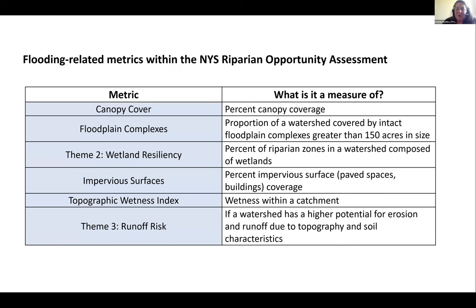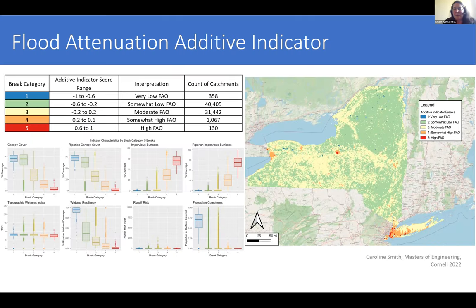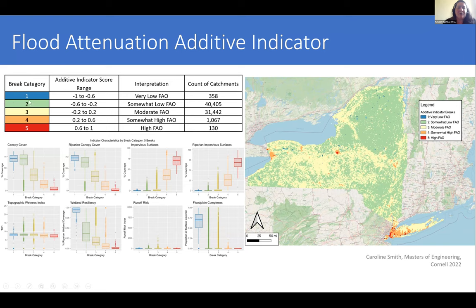We played around with combining those indicators into a flood attenuation theme using an additive approach, somewhat similar to the approach used in other themes. You can then map at the catchment scale whether a place is a high flood attenuation opportunity — meaning it's not currently providing flood attenuation but it could — or low. That was work with a student, Caroline Smith, who was excellent, but I'm not going to go into detail with that today since it's not live in the tool right now.